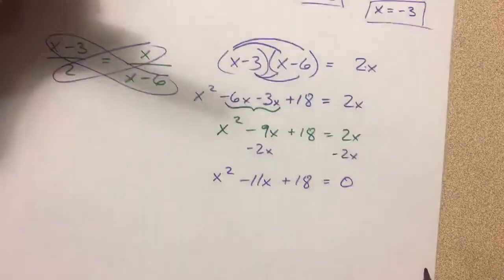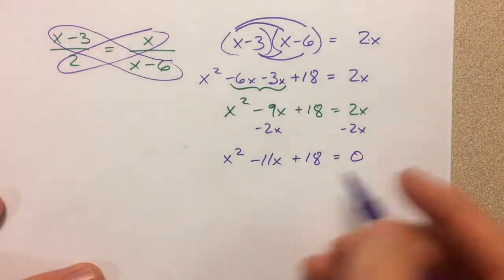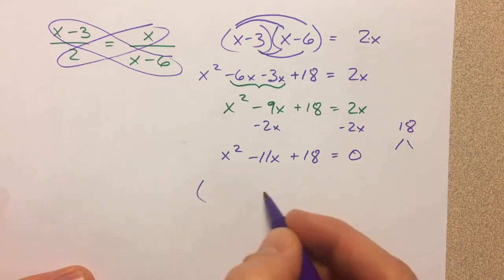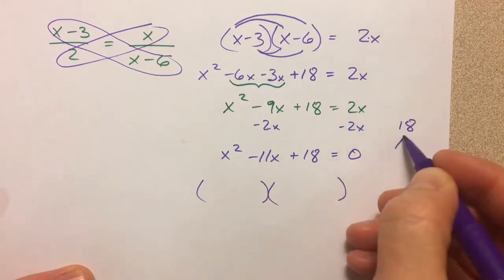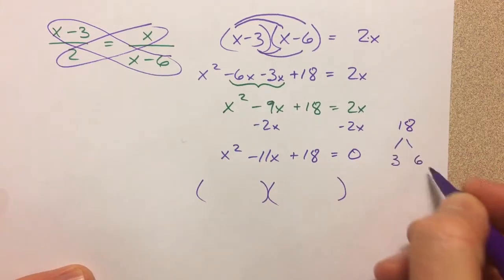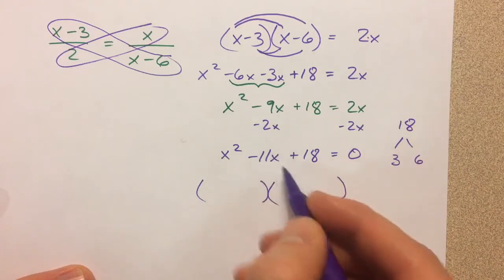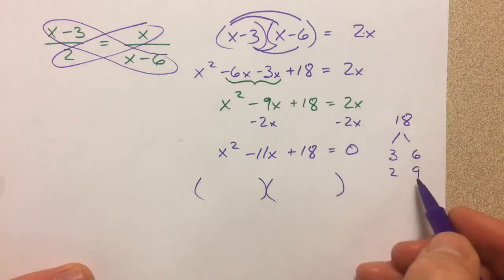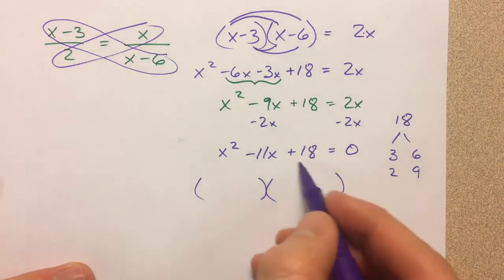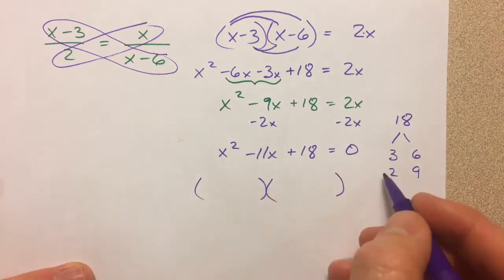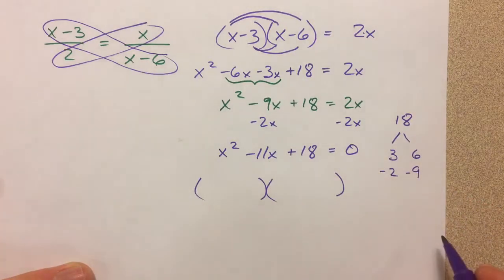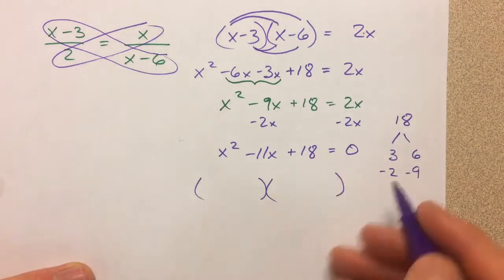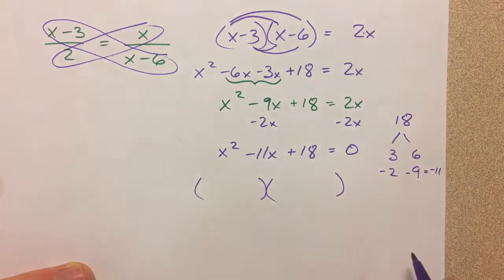So the idea is, get that 18 to multiply, what two numbers multiply to 18. So I could get 3 and 6, but they don't add to 11. I could get 2 and 9, and that's where my winner is. Now, how do I multiply to a positive and add to a negative? I need both of these to be negative, because the negative 2 times the negative 9 is a positive 18. But if I add them together, I get a negative 11.